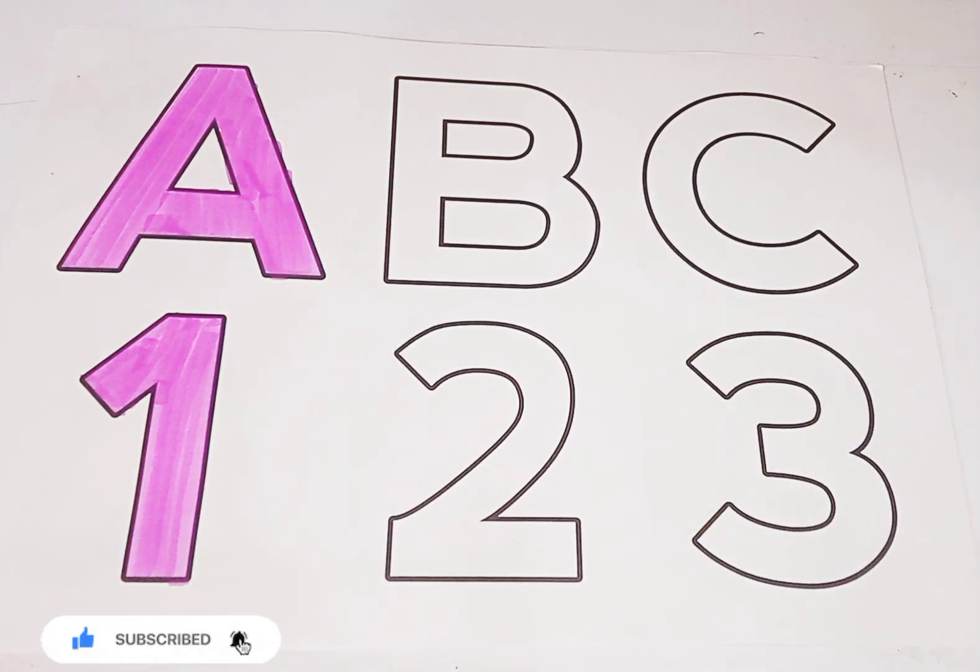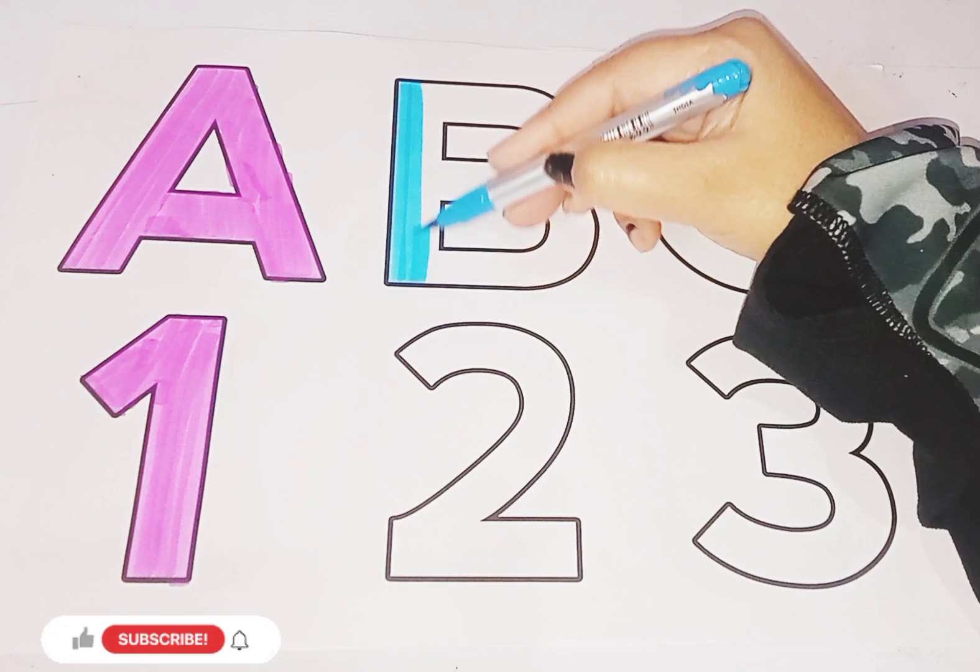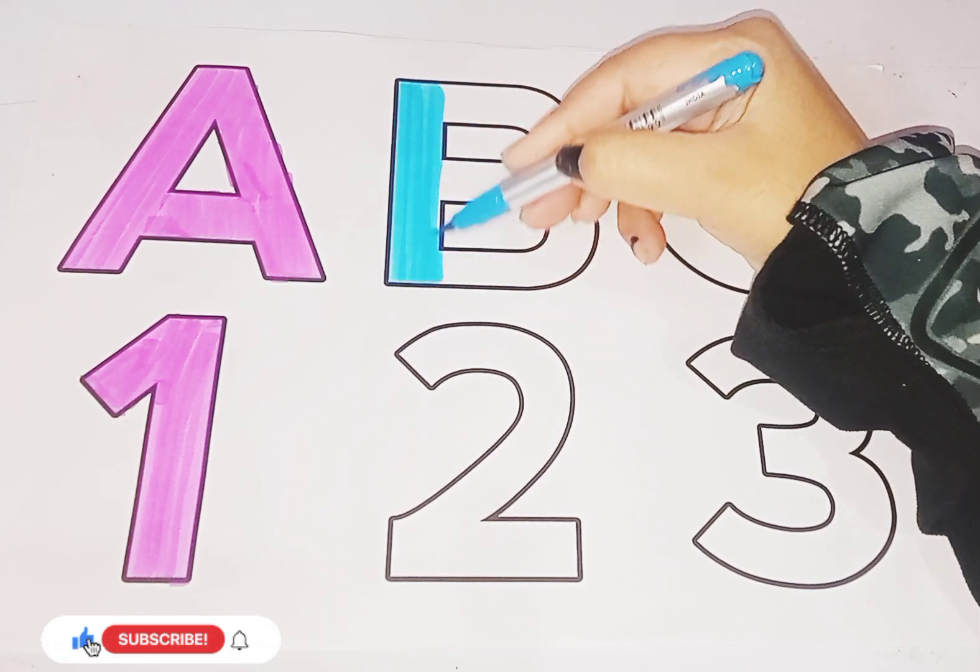Next is sky blue color, alphabets B. B for bat, B for bone. B for bat, B for bone.